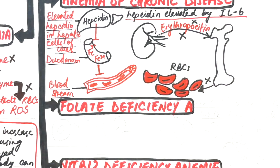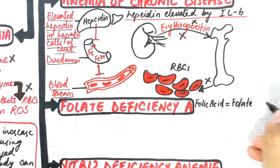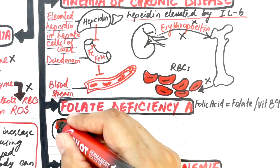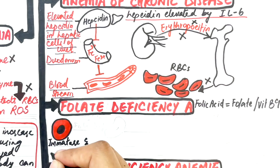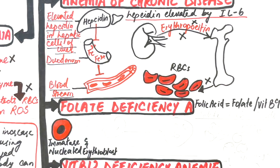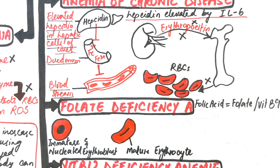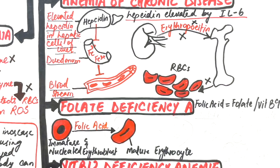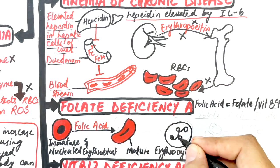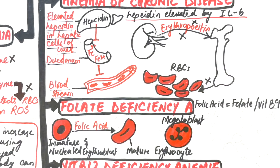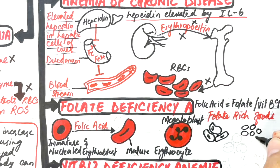Folate deficiency anemia is the next type of anemia of decreased erythropoiesis. Folic acid, also called folate or vitamin B9, plays an important role in the maturation of red blood cells, helping convert immature nucleated erythroblasts into mature non-nucleated erythrocytes. Deficiency in folic acid results in an abnormally large number of red blood cells called megaloblasts, which cannot carry out their functions properly. Since humans cannot produce their own folic acid, it must be obtained from foods such as beans and legumes.